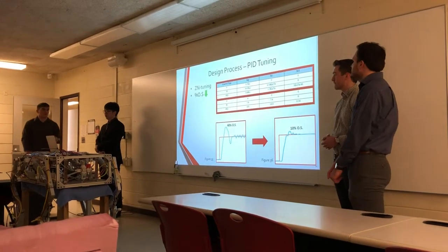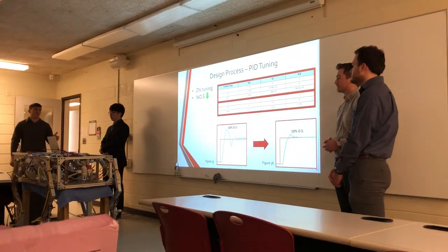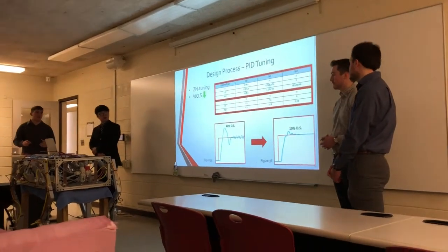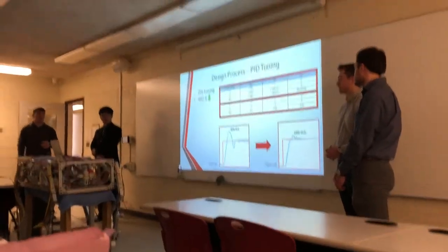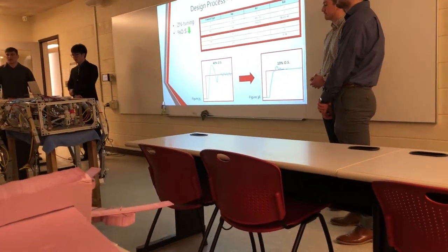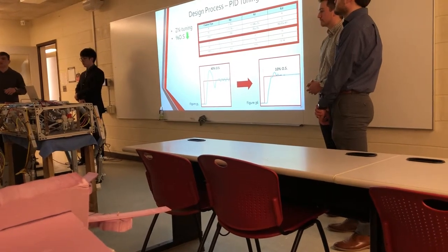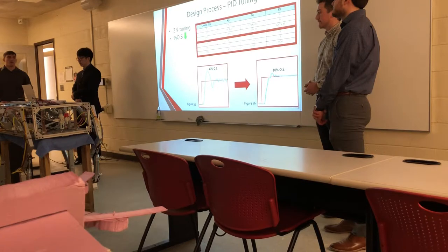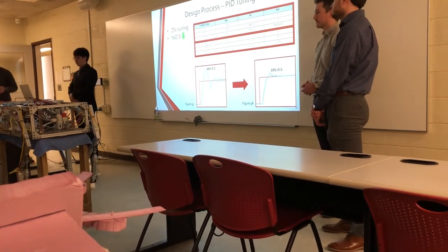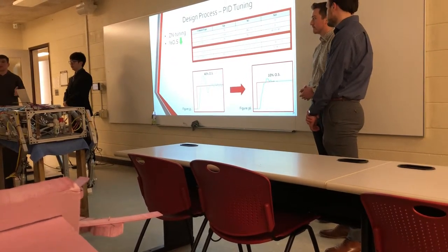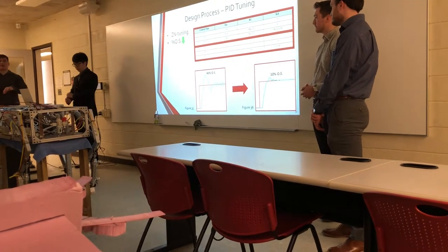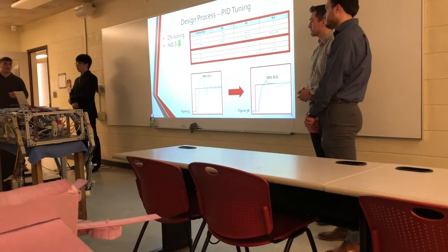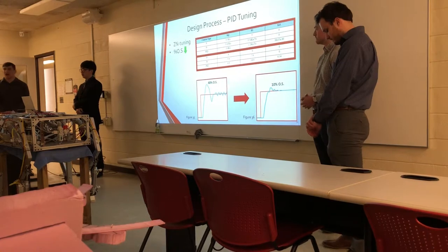The Ziegler-Nichols gains gave us a starting point, seen in figure 35. From there we did an iterative process, modifying the gains until we were satisfied with the response. The end result is figure 36. The main adjustments were: reducing the integral gain to reduce overshoot, increasing the proportional gain to speed up the response and reduce settling time, and increasing the derivative gain to increase stability. Through this process we went from 40% overshoot down to 10%, meeting our requirement of 5–10% overshoot. We then applied those gains to the actual response, slightly adjusting them for the steep ramp, and the actuation was much improved.